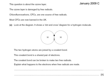And here's a past paper question. This question is about the ozone layer. The ozone layer is damaged by free radicals. Chlorofluorocarbons, CFCs, are one source of free radicals. Most CFCs are now banned in the UK. Look at the diagram — it shows a dot and cross diagram for a hydrogen molecule. The two hydrogen atoms are joined by a covalent bond, which is a shared pair of electrons. The covalent bond can be broken to make two free radicals. Explain what happens to the electrons when free radicals are made. One electron goes to each of the atoms.